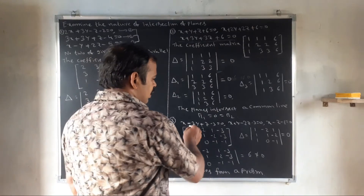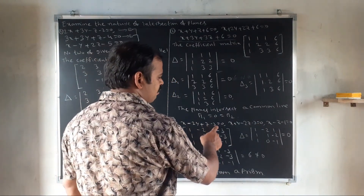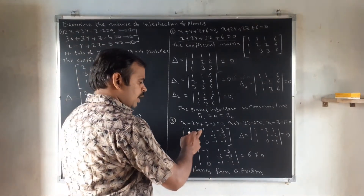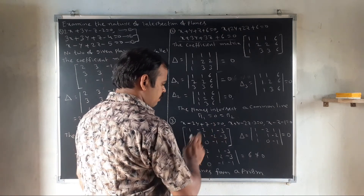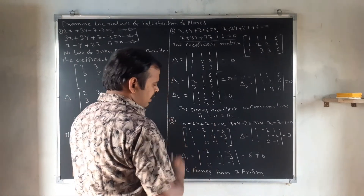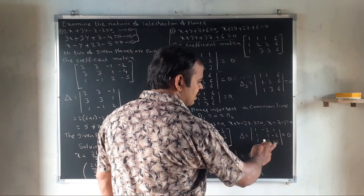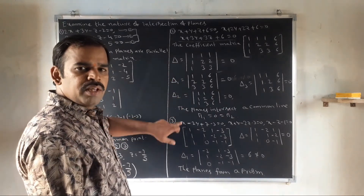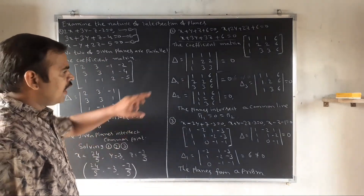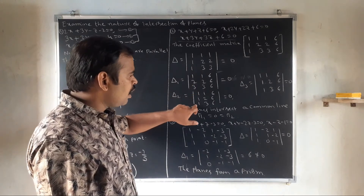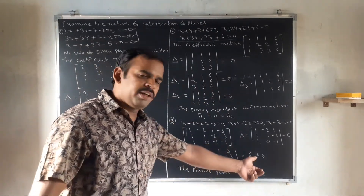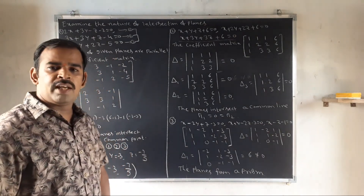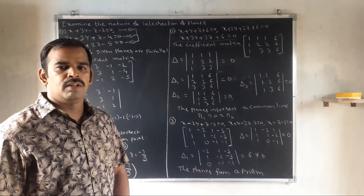Problem 3 — Method 3: x − 2y + z − 3 = 0; x + y − 2z − 3 = 0; x − z − 1 = 0. The coefficient matrix is (1, −2, 1, −3), (1, 1, −2, −3), (1, 0, −1, −1). Computing delta gives 0. Since delta equals zero, we compute delta1, delta2, delta3. Here, delta1 is not equal to zero, so the planes form a prism. Thank you.